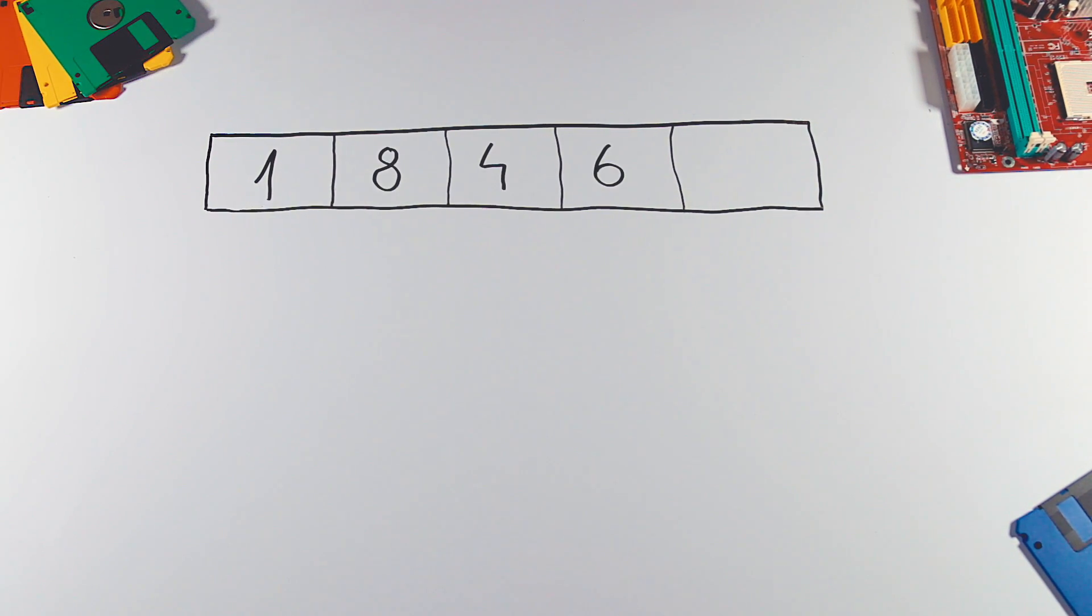Bubble Sort starts at the left and compares the first two numbers. One is smaller than 8, which means that the order is correct and we don't need to take an action. Let's go and compare the other two numbers. 8 and 4. 8 is bigger than 4, so we will swap them.